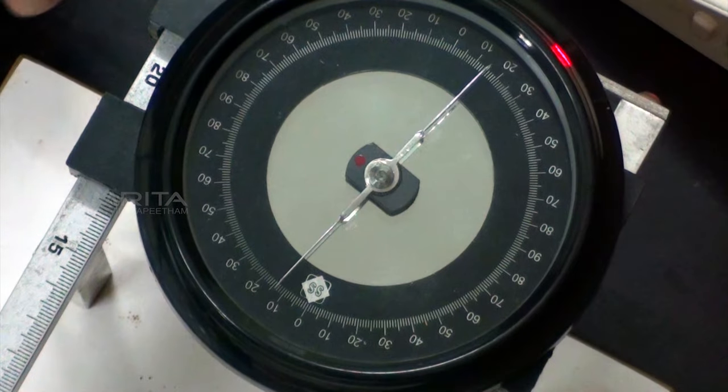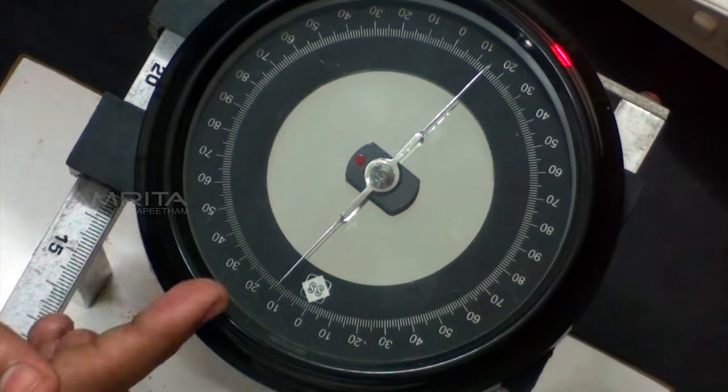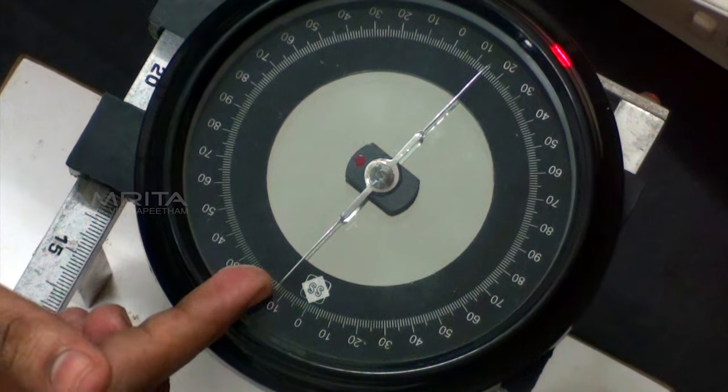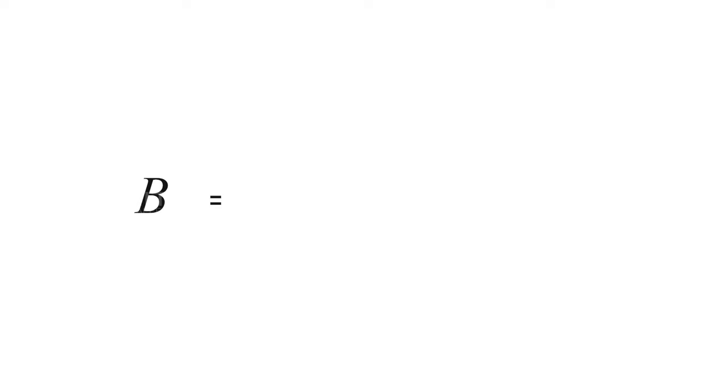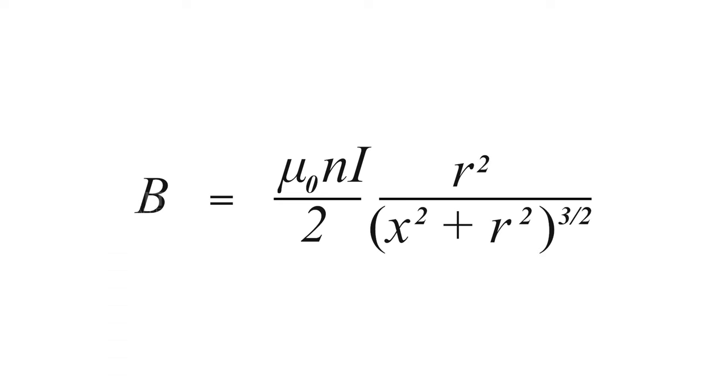Note the mean deflection at each point and calculate the corresponding magnetic field B using the equation B = (μ₀ n i)/(2) × (r²)/((x² + r²)^(3/2)).